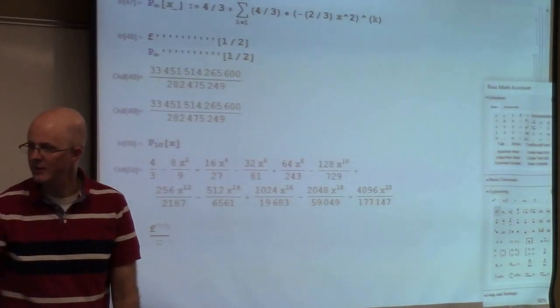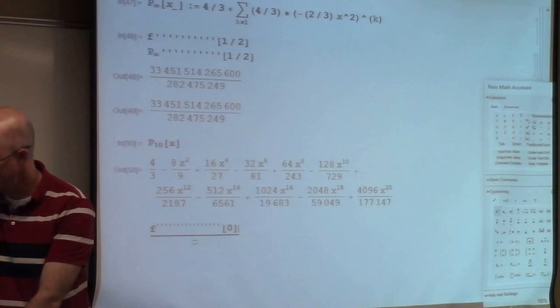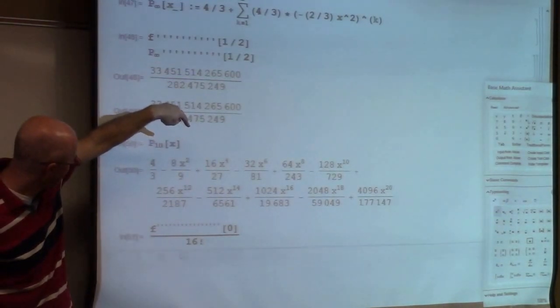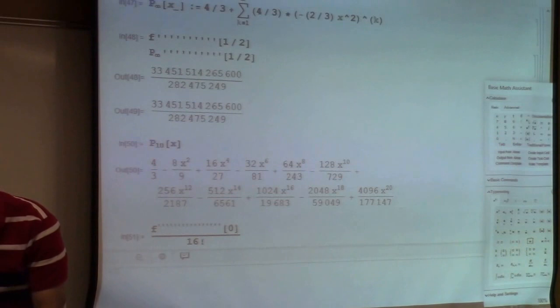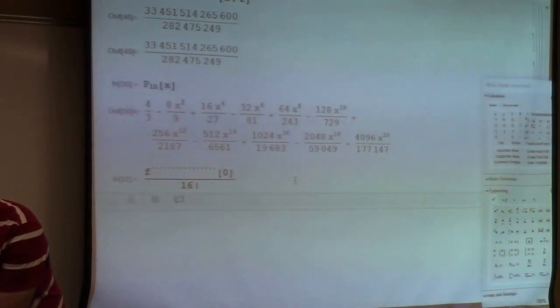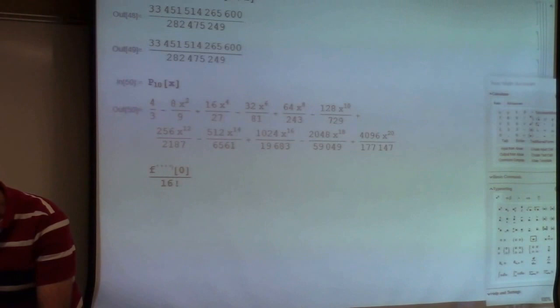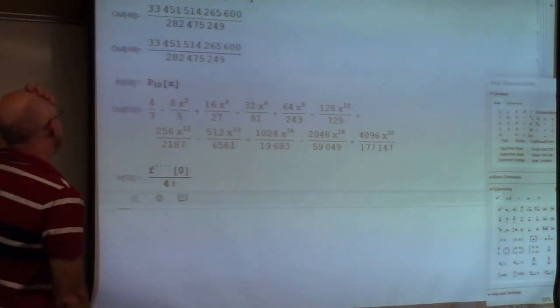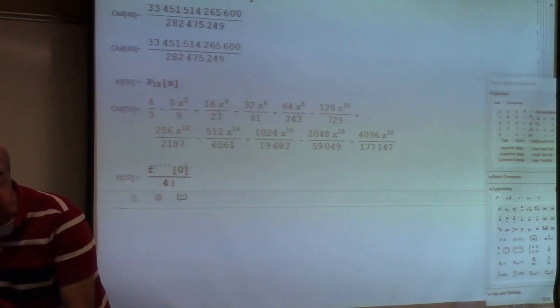16th derivative at 0, divide by 16 factorial, drum roll, we should get 1,024 over 19,683. What? Didn't I type it in? Drum roll again? Come on. What is it giving? Ah! Okay, let's try some other one. Let's try the fourth derivative at 0, divide by 4 factorial. Hopefully it's 16 over 27. Please do it. What? Oh! Is it because the... Do you have that upper subscript thingy? Could you just not do it and just... Oh, I bet you're right. Ah! Yes. Don't do that.